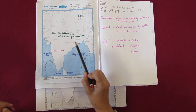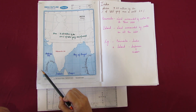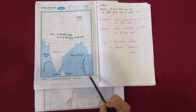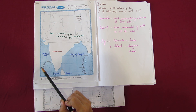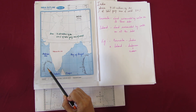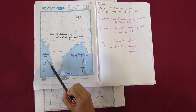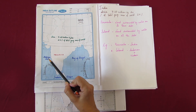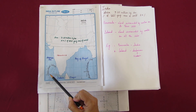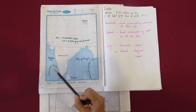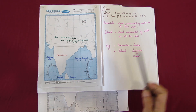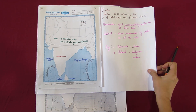As part of the Indian Territory, there are groups of islands. Islands refer to land surfaces surrounded on all sides by water bodies. In the Arabian Sea, we have the Lakshadweep Islands, and in the Bay of Bengal, we have the Andaman and Nicobar Islands.